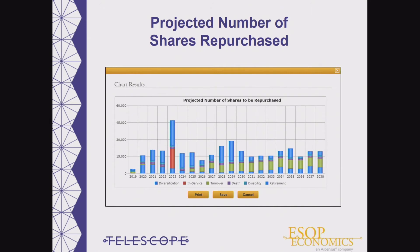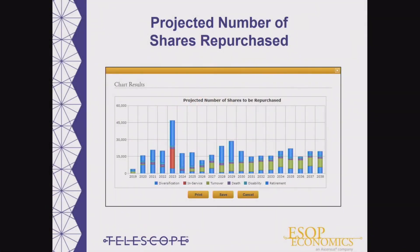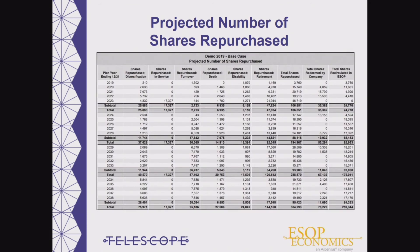First, we'll take a look at a chart for the projected number of shares repurchased. This chart shows what's driving your repurchase obligations — the projected number of shares to be repurchased for each reason: turnover, retirement, diversification, death, disability, and even a one-time in-service distribution. These charts can easily be saved for inclusion in a board report. We can also look at this same report in PDF format, broken down by reason, so we can quickly drill down and see what is causing repurchase obligations to be high in any given year, and also the breakdown between shares that are recirculated versus redeemed or releveraged.